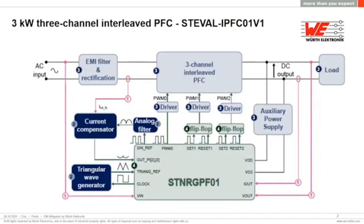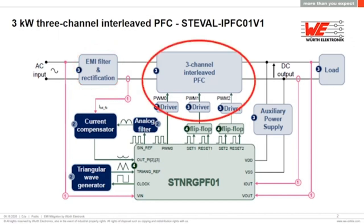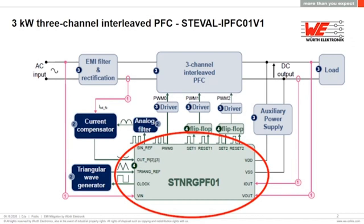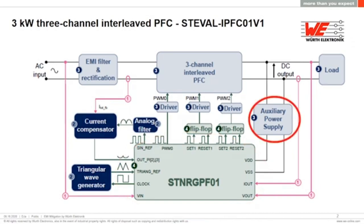Let's take an example of an AC-DC power supply from ST-Micro. It's a 3 kilowatt, 3-channel interleaved PFC. In the front end of this power supply, it has an EMI filter and rectification, which is fed to the 3-channel interleaved PFC to provide the desired DC voltage and current. This is controlled by the digital controller from ST-Micro, which is ST-NRG-PF01. This digital controller is getting power from the auxiliary power supply, which is coming out of the DC output of the front end supply.